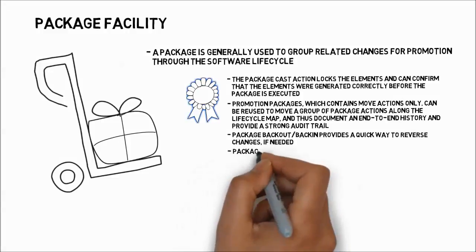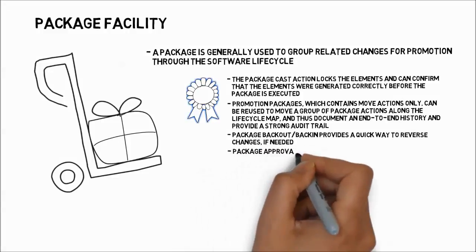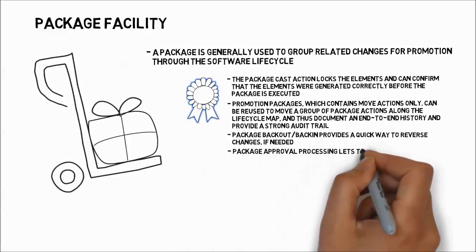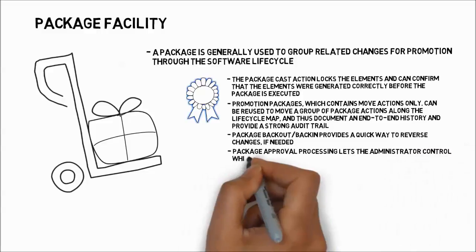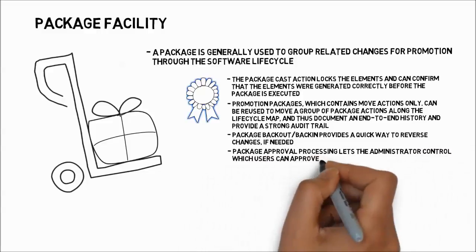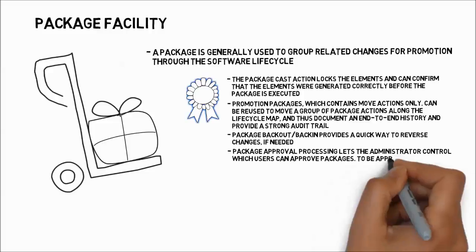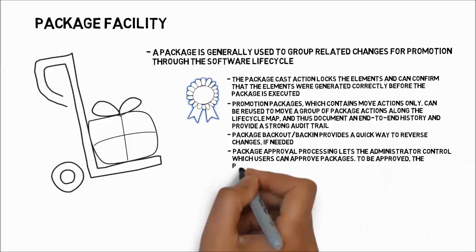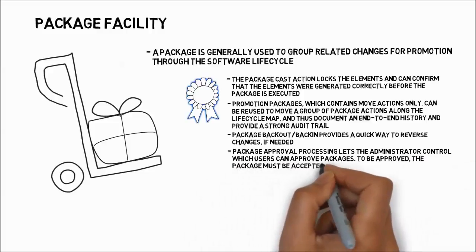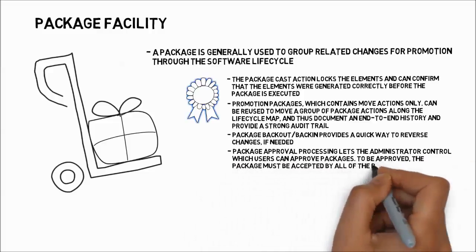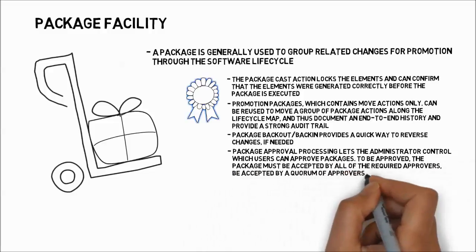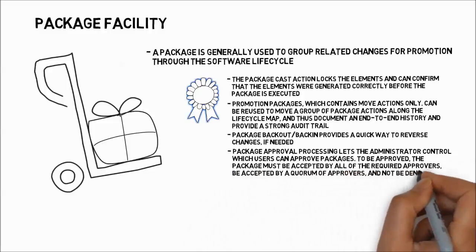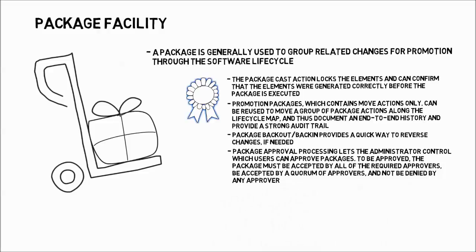Package approval processing lets the administrator control which users can approve packages. If one or more approver groups are associated with the inventory areas included in a package, then the package must be reviewed and approved before it can be executed. To be approved, the package must be accepted by all of the required approvers, be accepted by a quorum of approvers, and not be denied by any approver.